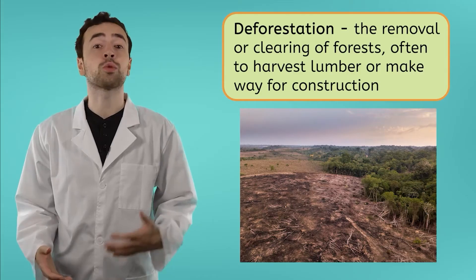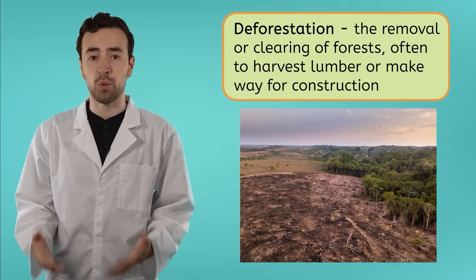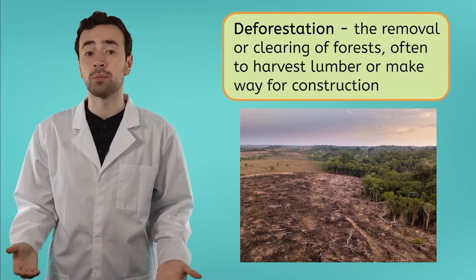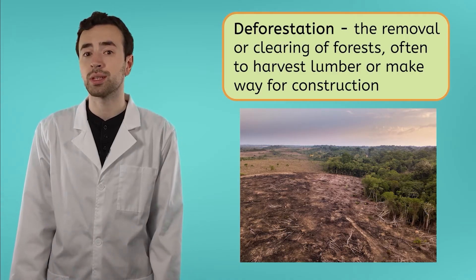Being renewable, the supply of trees should be replenished as it's used. But when we cut down trees faster than they can regrow, we cause deforestation. Deforestation means the removal or clearing of forests, often to harvest lumber or to make way for farms, houses, and other buildings.